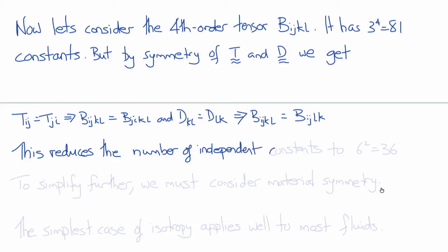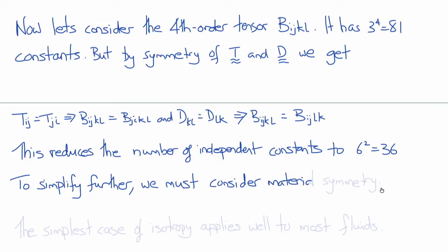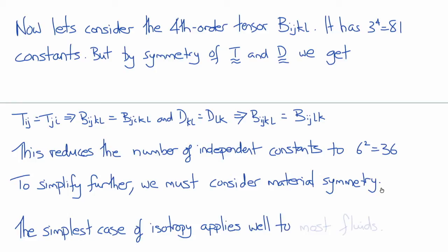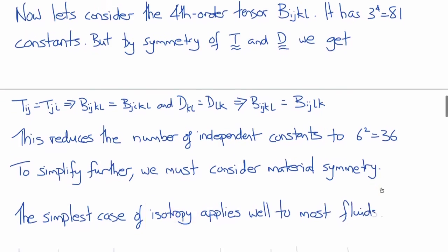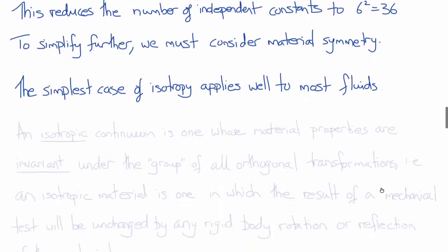Think of that 36 as being 6 squared: there are 6 different components of the symmetric stress tensor and 6 different components of the symmetric rate of deformation tensor, so there must be 6 by 6 independent coefficients. Now, to simplify B_ijkl more than this, we must consider material symmetry. Material symmetry describes the properties of the material as a function of orientation, and the simplest case is isotropy, which applies essentially to all fluids except very unusual fluids like liquid crystals.